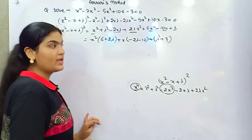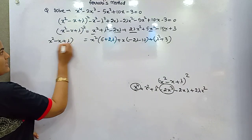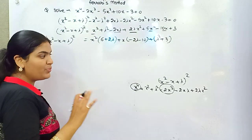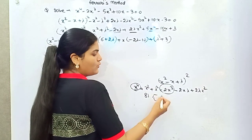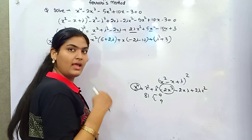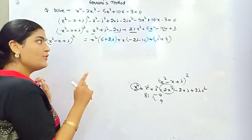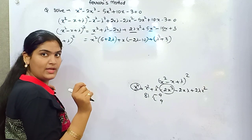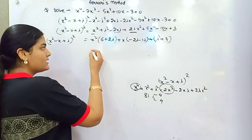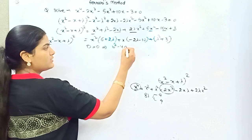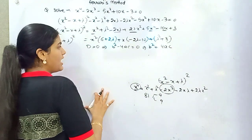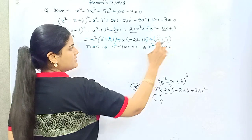Now you can see that the right-hand side should be a perfect square. Just like 81 has the perfect square root 9, that means you have real and equal roots for this expression. If you have real and equal roots for a quadratic equation, when you apply the quadratic formula the discriminant must be zero — so D = 0, meaning b² minus 4ac equals zero, that means b² = 4ac.